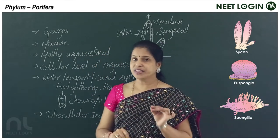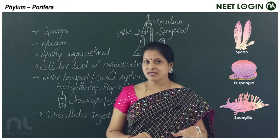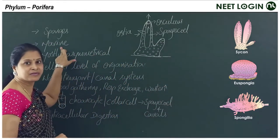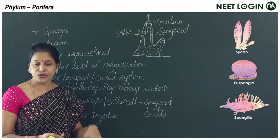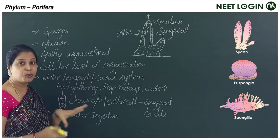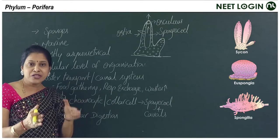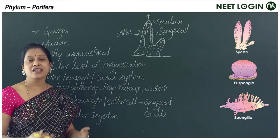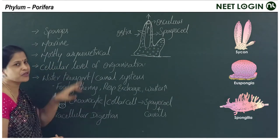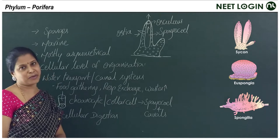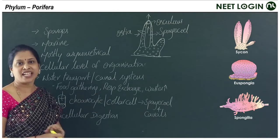The poriferans are the first and earliest metazoans. They are generally marine — some are freshwater, but mostly they are seen in marine waters, in the oceans and seas. The body is mostly asymmetrical. Asymmetrical means if you cut through any plane, it is not possible to obtain identical images. They are mostly asymmetrical, though radial symmetry is not mentioned in the NCRT book.